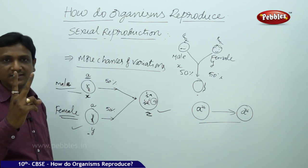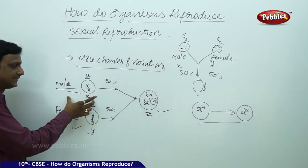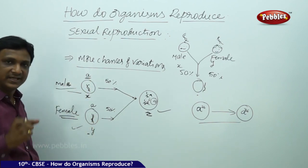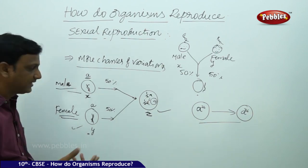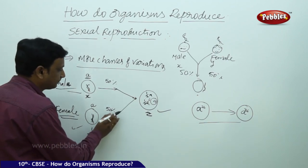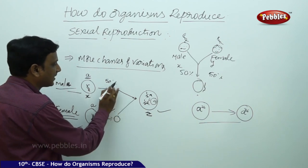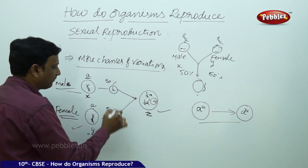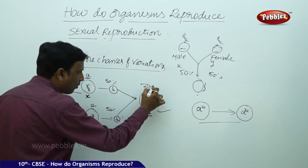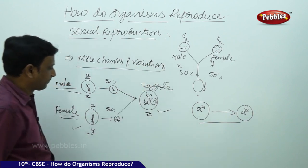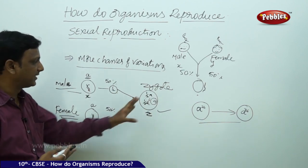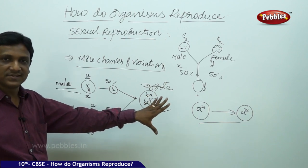The male X has some variations, and the female Y has some variations. Two individuals with different variations produce a zygote. The female produces the female cell and the male produces the male cell, which contains half the number of chromosomes. These two cells join together to form a zygote. This zygote will have very good variations — helpful variations are accumulated here. This zygote is a new variant.